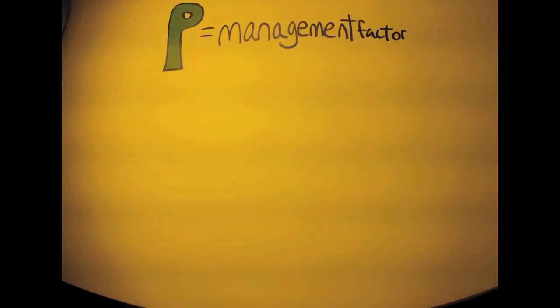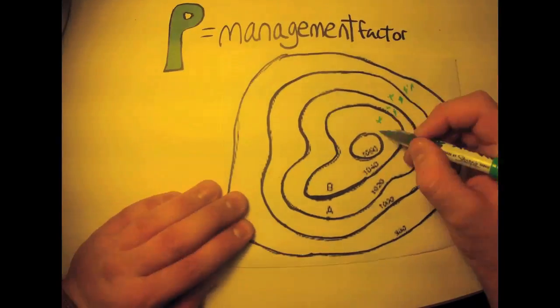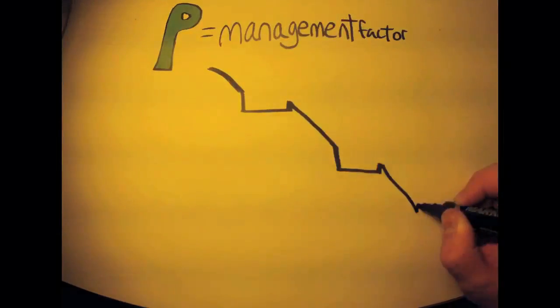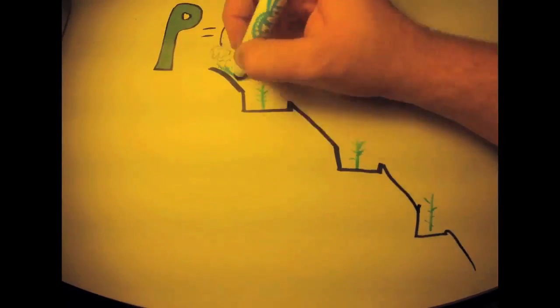P is the management factor, which represents practices farmers use to reduce soil loss. Contour cultivation is when rows of crops match the contours of lands to slow runoff. Terracing is used to slow and catch water in very steep areas.